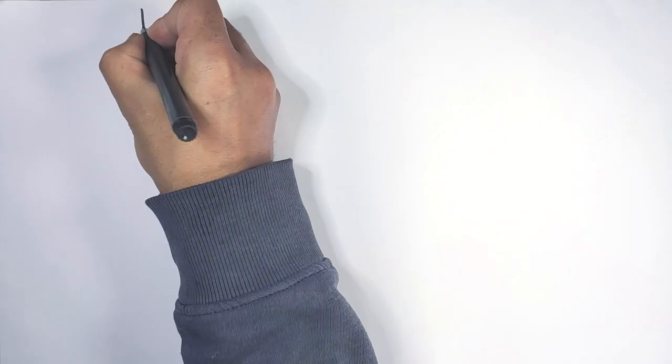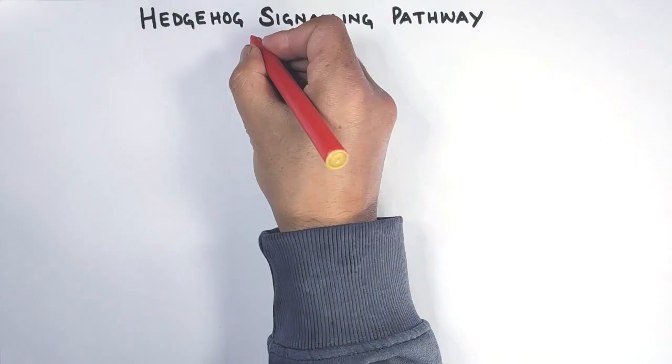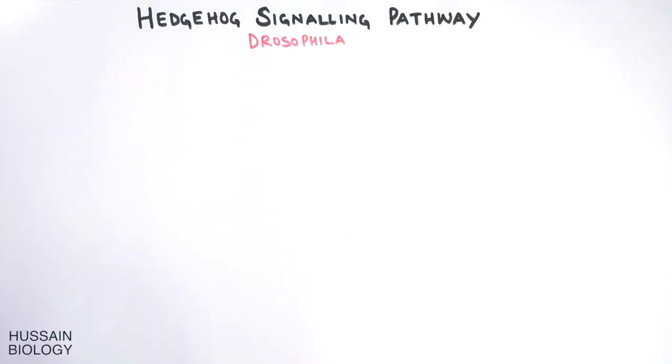In this video we'll be discussing the hedgehog signaling pathway in Drosophila. This signaling pathway plays a part during developmental stages, and in Drosophila the hedgehog protein is a product of segment polarity genes, so it's involved in body plan development.